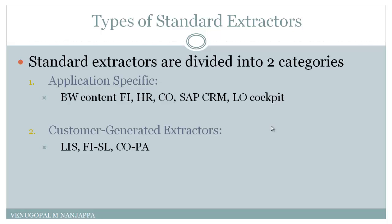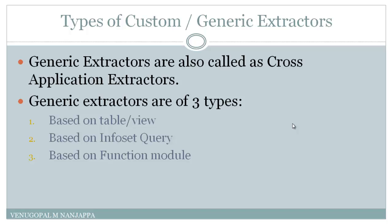Generic extractors are also called cross-application extractors. They are of three types: one can be created based on a table or view existing in the data dictionary; the second can be created based on an InfoSet query, which are ABAP queries; and the third is created based on a function module, where we write custom logic inside the function module to fetch data from different source tables and pass it to the extract structure.